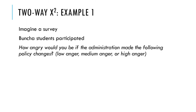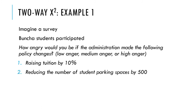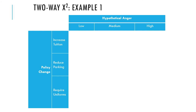Imagine that you're conducting a survey. A whole bunch of students participated, and one question was: how angry would you be if the administration made the following policy changes — would you have low anger, medium anger, or high anger? Policy changes include raising tuition by 10%, reducing the number of student parking spaces by 500, and requiring uniforms for attendance to all classes. You tally your data. You've got two variables: the policy change being contemplated, and the anger level. This gives you a two-way contingency table — each cell shows the number of students whose responses fell into those categories.